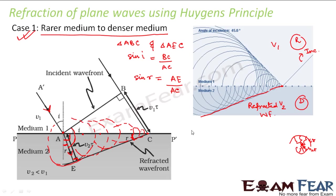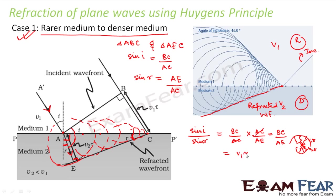So sin R is perpendicular by hypotenuse. The perpendicular is AE and the hypotenuse is again AC. Therefore this will be equal to AE by AC. Now if you divide both equations, sin I by sin R equals BC by AC divided by AE by AC, which equals BC by AE. BC is nothing but V1 times tau — from point B to point C the distance is velocity times time. And AE is V2 times tau. So this is equal to V1 by V2.